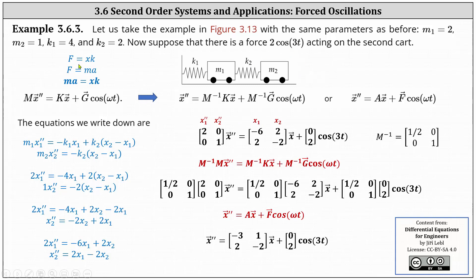Recall force equals spring compression times spring constant K, and force also equals mass times acceleration. For mass one, the left side of the first equation is M one times X one double prime. As mass one moves to the right, the first spring is stretched, giving a negative force equal to negative K one times X one. As M one moves to the right, the second spring is compressed, giving a positive force equal to K two times the difference of X two and X one.